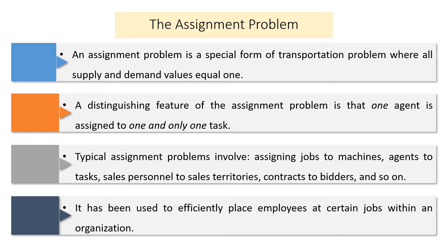In all these applications, there is only a one-to-one correspondence between the person or agent and the tasks or jobs. It has been used efficiently to place employees at certain jobs, since every employee has a different performance in accomplishing different tasks. The main objective is either to minimize the time or the cost required by employees for accomplishing the tasks.